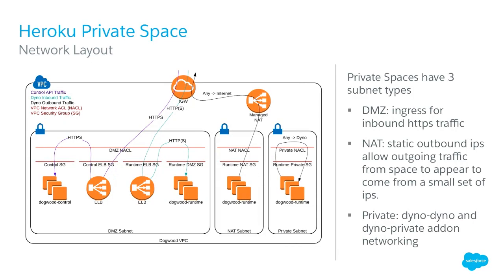Let's do a deep dive into the network layout in a private space. The DMZ network is where web traffic ingresses to your private VPC. The NAT network handles outgoing traffic through a NAT gateway with static IPs for whitelisting. The private network is where all the fun happens — it allows dyno-to-dyno communication and enables private database add-ons, so you talk to your database over a private connection rather than the public Internet.